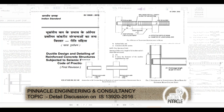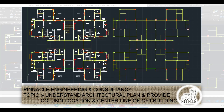Then we have a detailed discussion on IS 13920-2016, covering important points like anchorage length, hoop spacing, minimum and maximum numbers of bars, minimum dimensions of beams and columns, and many other requirements. Then we understand the high-rise building architectural plan.